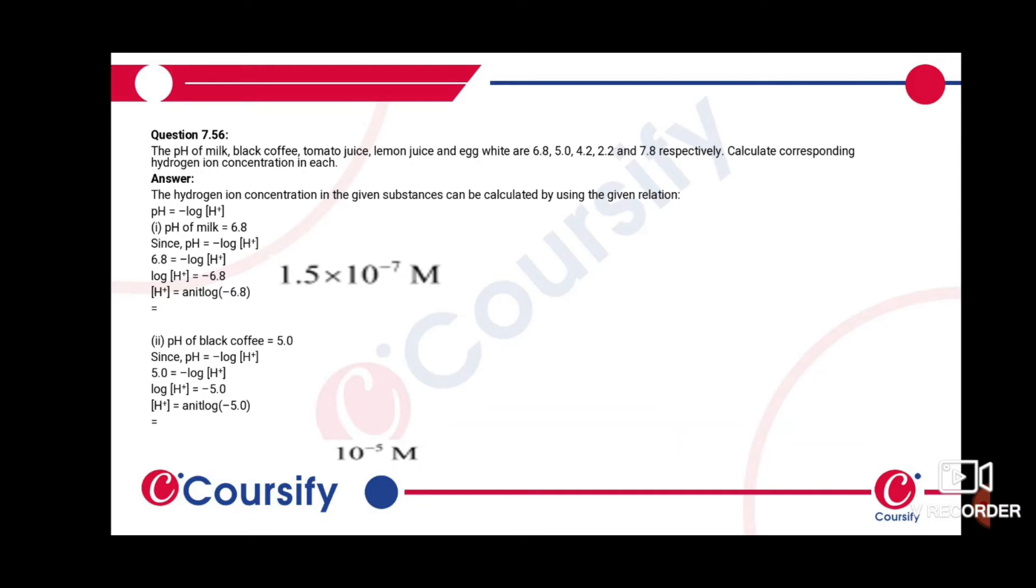For the pH of milk, 6.8, the hydrogen ion concentration is calculated using antilog of -6.8, which gives 1.5 × 10^-7 M.